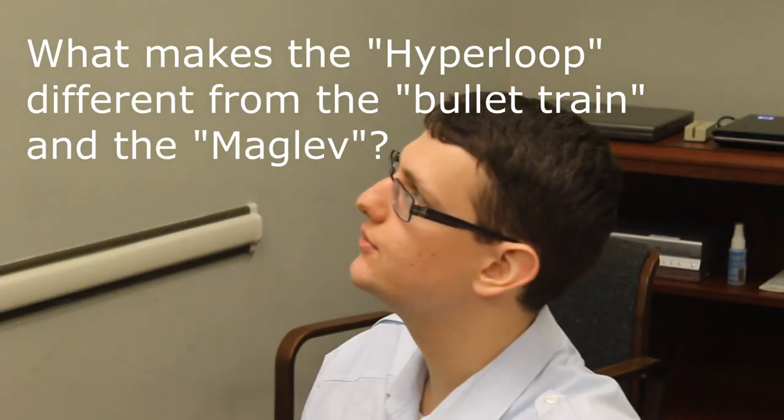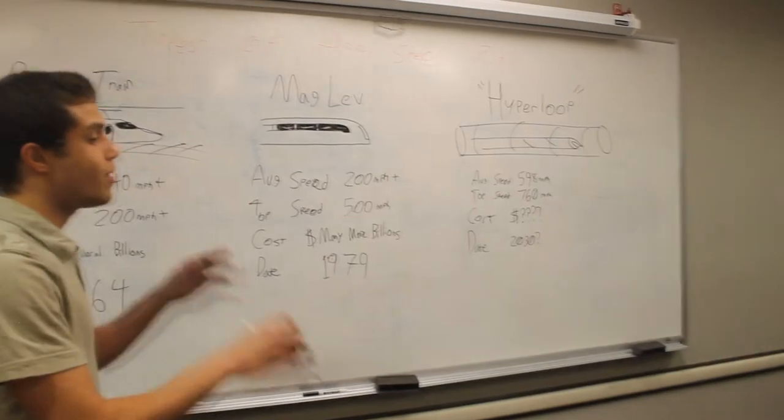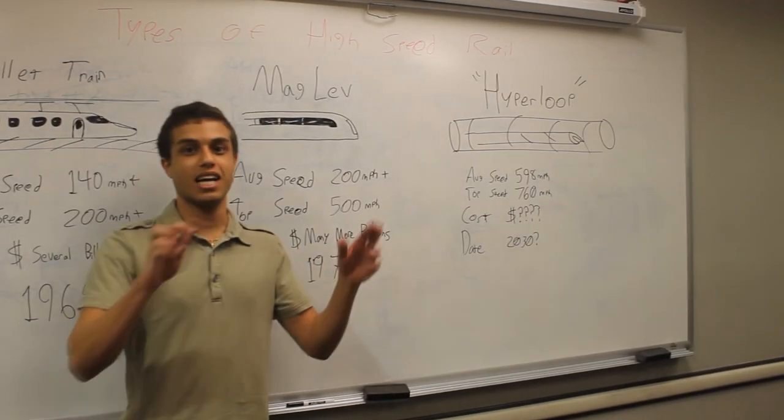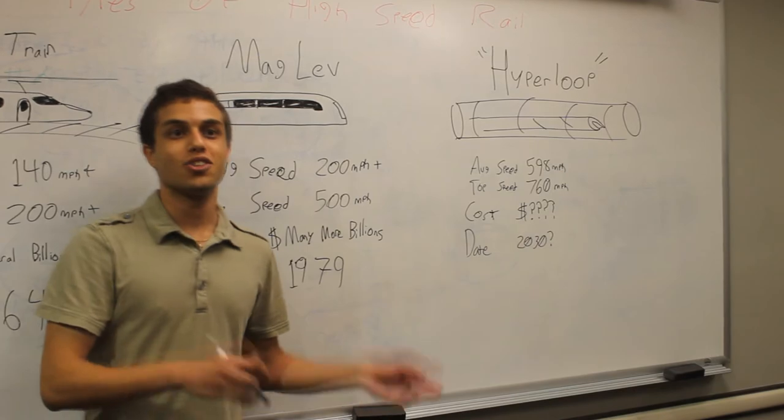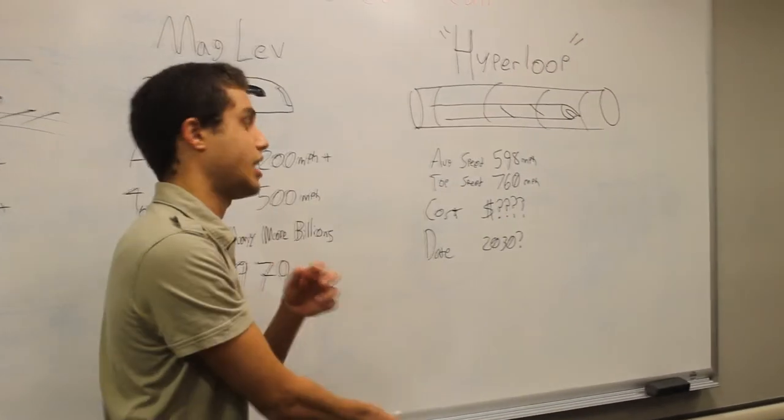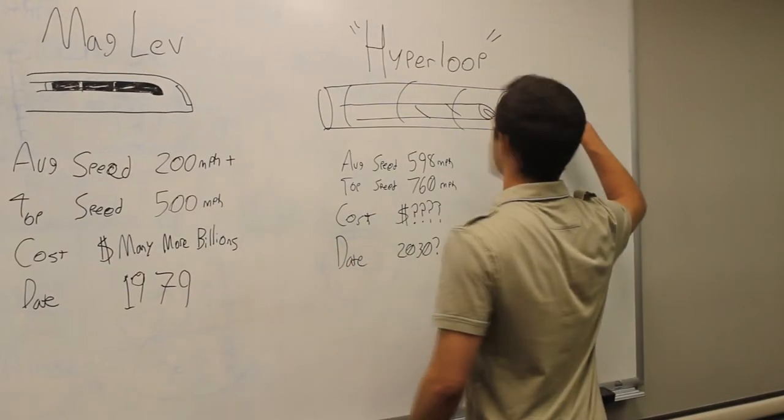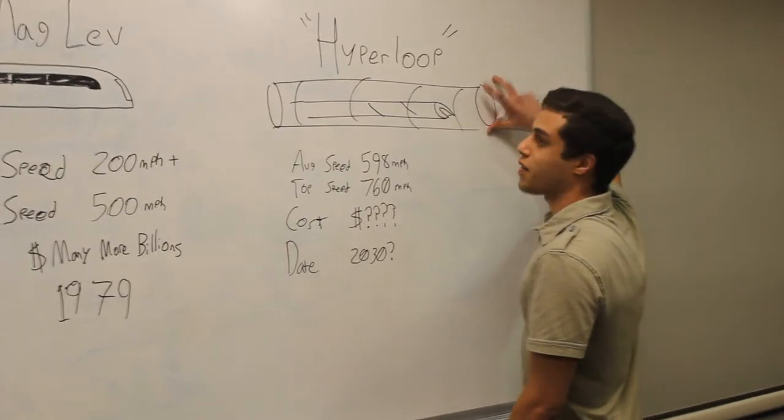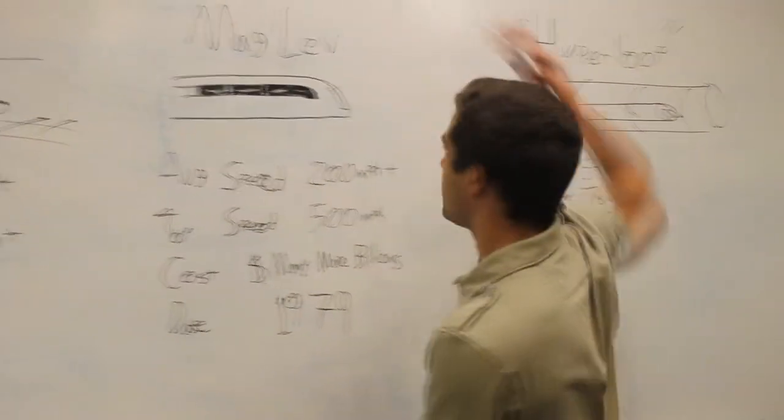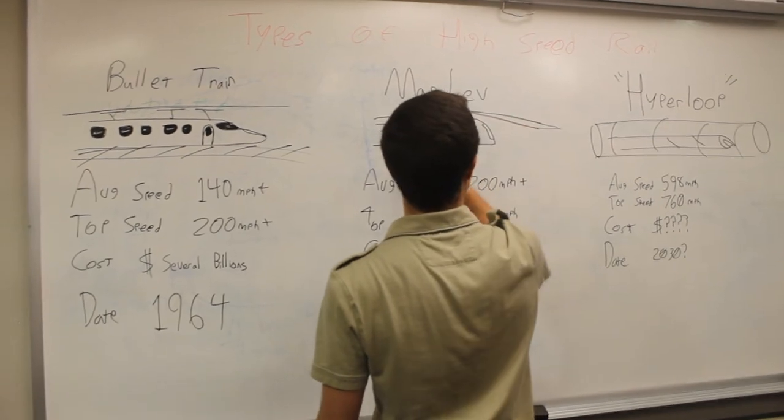What makes the Hyperloop different from the bullet train and the Maglev? Remember, the Hyperloop is just theoretical science as it stands right now. It's not in reality, something we can use or take right now. The Hyperloop works in a contained cylinder. In comparison to the Maglev and the bullet train, they have to run and cross through air, so they have to be aerodynamic.